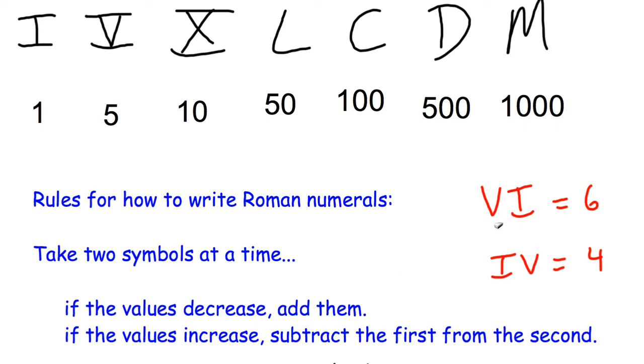So simple examples here. A 5 and a 1 make 6. The value is actually going down, that's when I add. When the values go up, that's when I subtract.